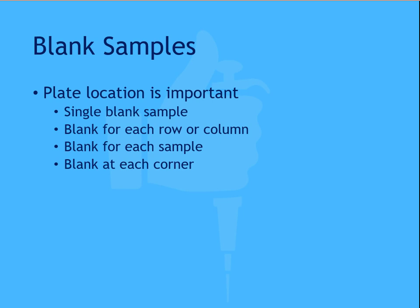For example, if there's variation of precision across the plate due to measurement technology, perhaps a blank group is included on each row or column. Other options include a dedicated blank group for each sample, or a blank sample at each corner of the plate. The most appropriate option will depend on the type of assay you're running and the measurement technology in use.